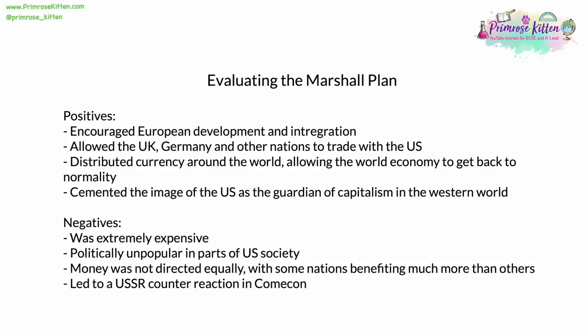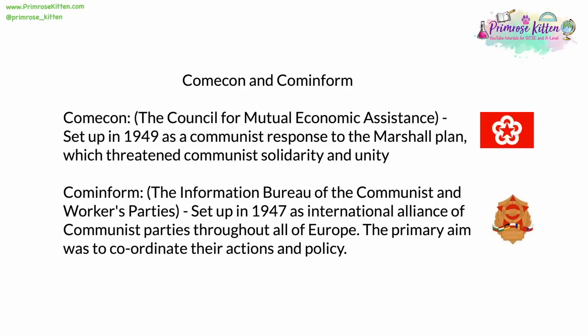Comecon and Cominform were two important organizations set up by the Soviet Union. The Council for Mutual Economic Assistance, or Comecon, was set up in 1949. It was a communist, Russian-led response to the Marshall Plan, which had threatened communist solidarity with its offers of aid to Eastern Europe. Comecon was the USSR's version of the Marshall Plan, although it had much less scope in terms of financial aid. The Information Bureau of the Communist and Workers' Parties, also known as Cominform, was set up in 1947. It was an international alliance of communist parties throughout Europe, with the primary aim of coordinating their actions and policy, and trying to install communists in governments in Western Europe. Many people later viewed Cominform as nothing more than a propaganda institution and the arm of the USSR in many Western states.